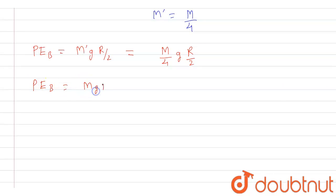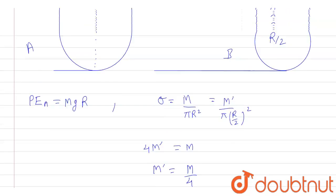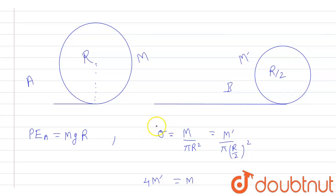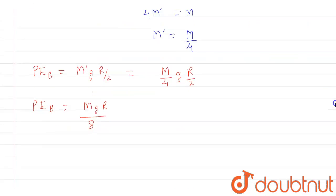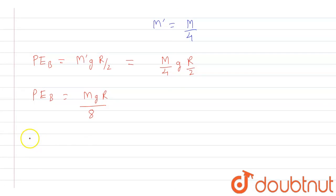So what we have to calculate is decrease in potential energy. So initially the potential energy was MGR and finally the potential energy becomes MGR by 8. So that means decrease in potential energy, so delta PE will be equal to PE A minus PE B. And this will be equal to MGR minus, wait a minute, MGR by 8.